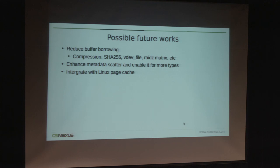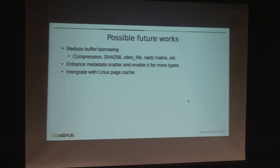For future work: first, we need to reduce buffer borrowing, because copying data when borrowing from a scatter ABD adds extra overhead. Second, we need to enhance the metadata scatter code to make it more efficient and enable it for more metadata types. Finally, we want to integrate with the Linux page cache to solve the double caching issue for memory mapping.